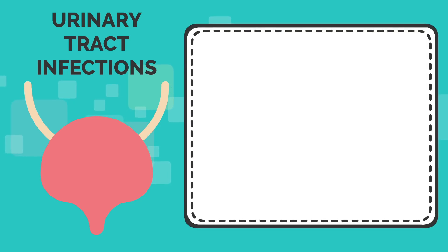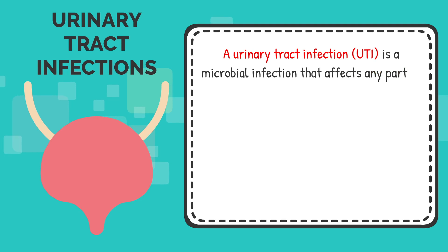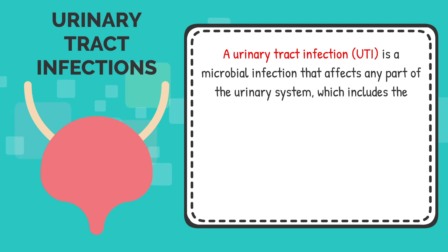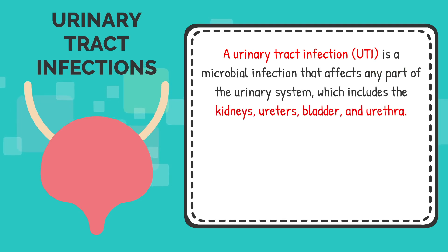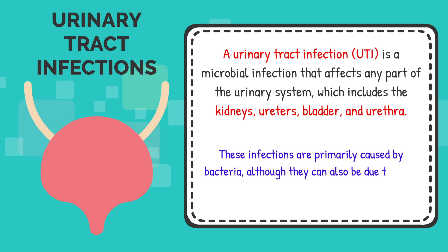A urinary tract infection is a microbial infection that affects any part of the urinary system. This includes kidneys, ureters, bladder, and the urethra. These infections are primarily caused by bacteria, although they can also be due to fungi or viruses.